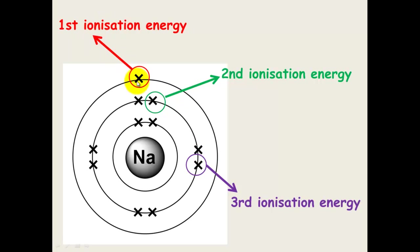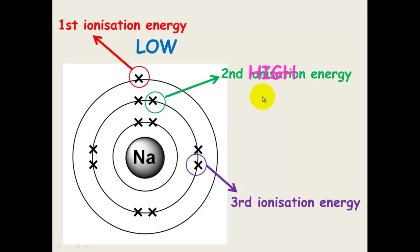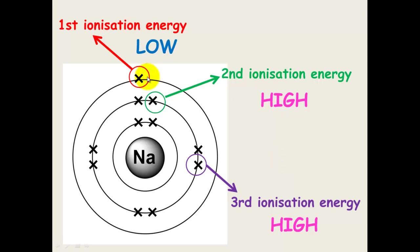To remove sodium's first outer electron doesn't require much energy — that's what sodium wants to do, so it has low ionization energy. But removing from the full stable second shell requires a lot of energy, giving high ionization energy. The same applies to the third ionization energy. So for sodium: the first ionization energy is low, but removing a second or third electron requires lots of energy — high ionization energy.